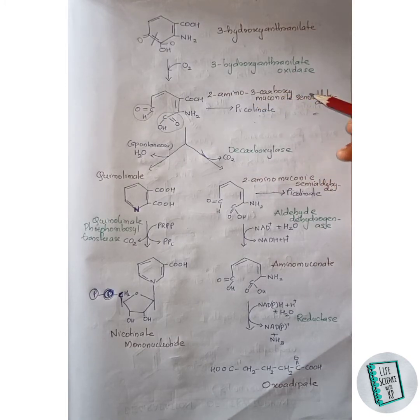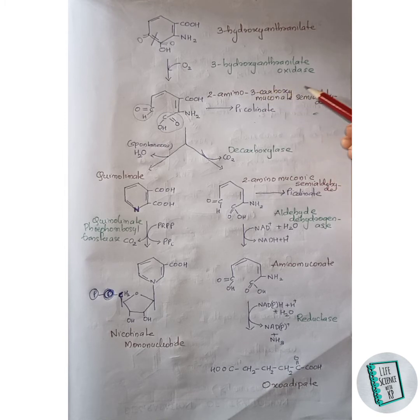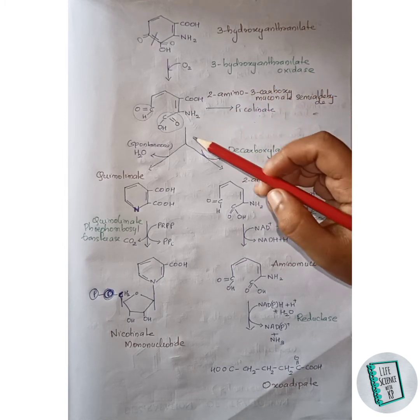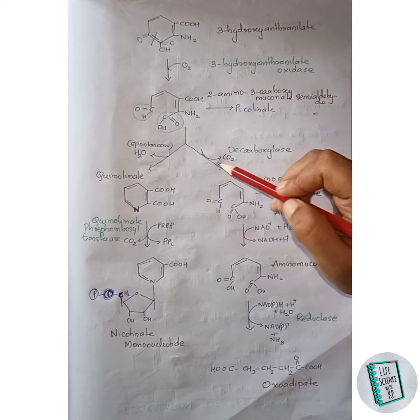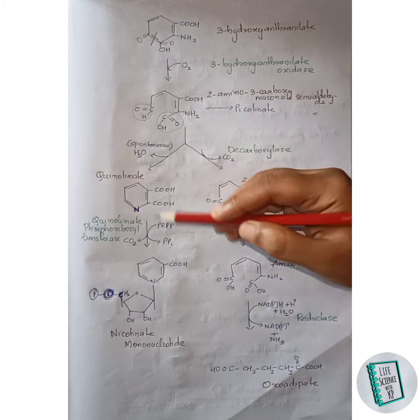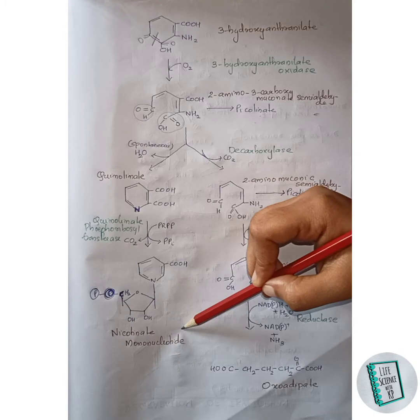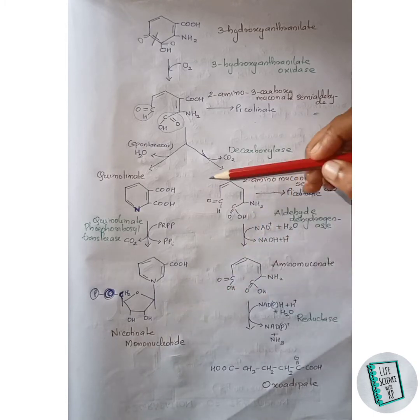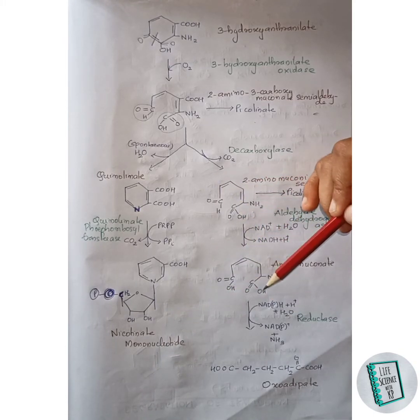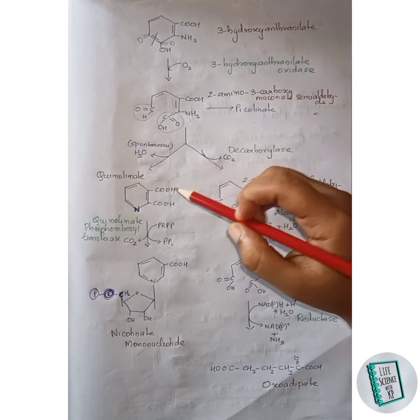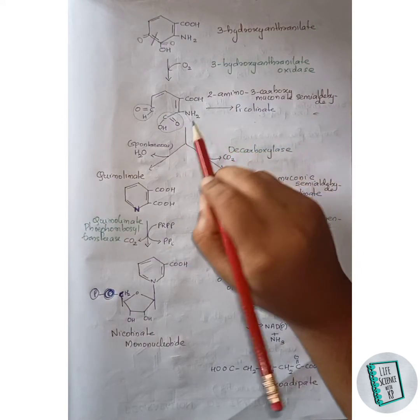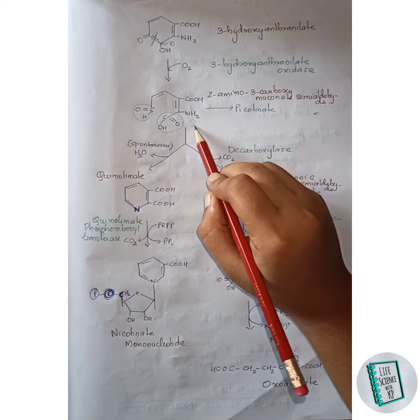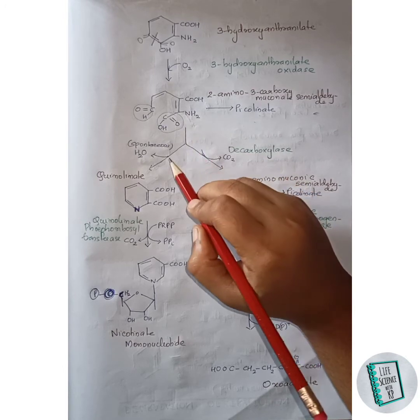2-amino-3-carboxy muconate semialdehyde can give rise to picolinate through another pathway. Here it diverges into two pathways: one for the production of nicotinate mononucleotide and another for the production of acetyl-CoA. First, we will look at the nicotinate mononucleotide branch.